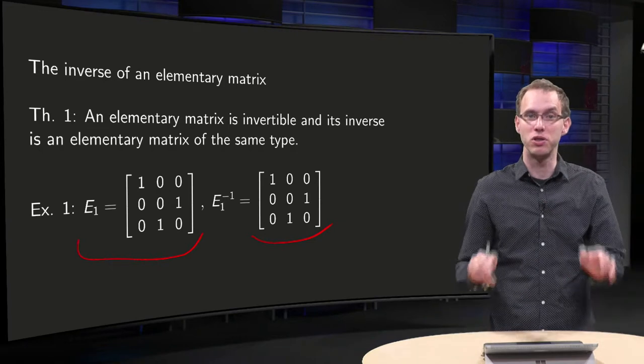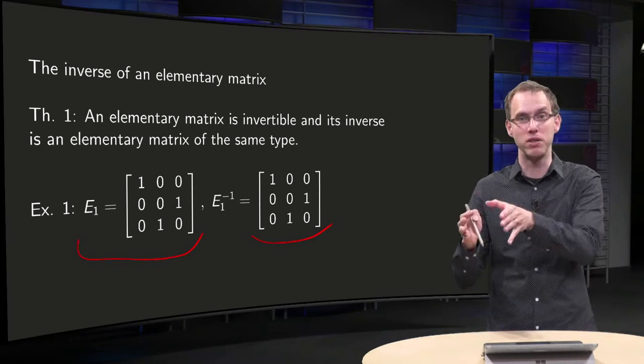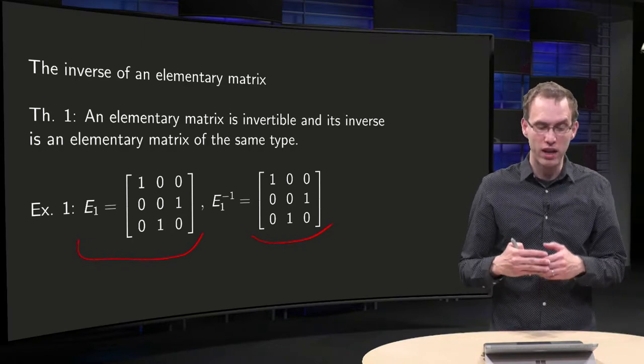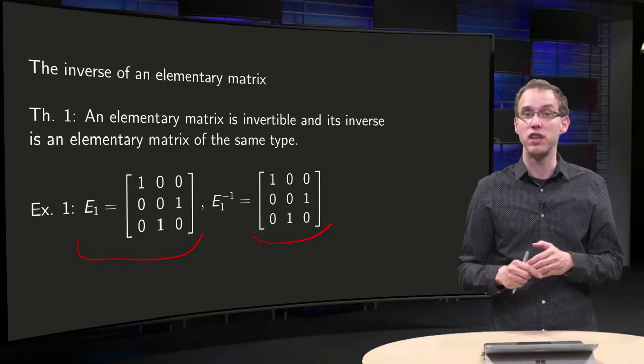So E1 inverse times E1 gives you the identity matrix again. Actually, in this case, E1 and E1 inverse are the same matrix.